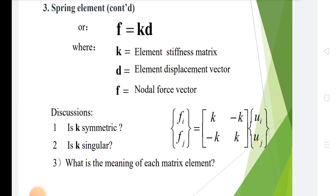For the spring element, f equals k times d, where k is the element stiffness matrix, small d is the element displacement vector, and small f is the nodal force vector. Note that each k matrix is symmetric. The relation is: [fi, fj] equals [k, -k; -k, k] times [ui, uj].